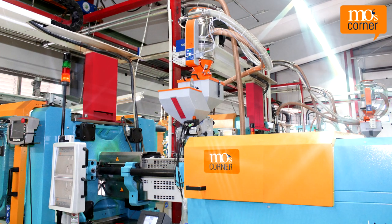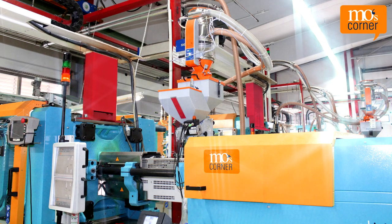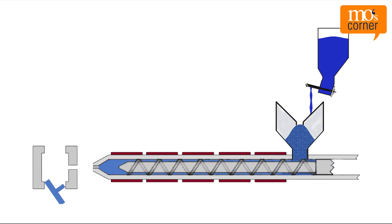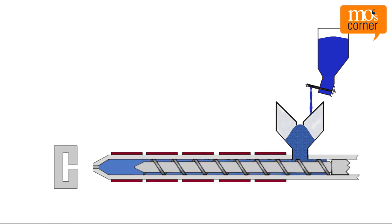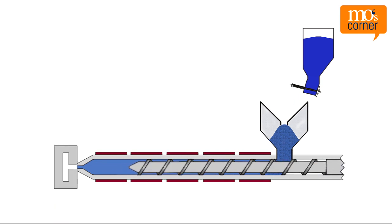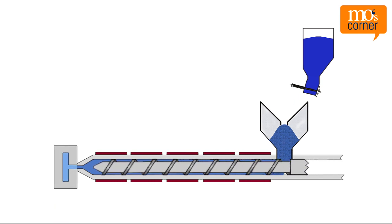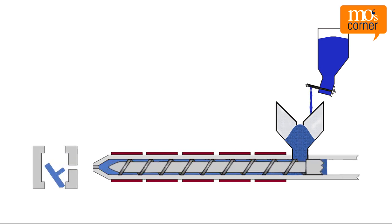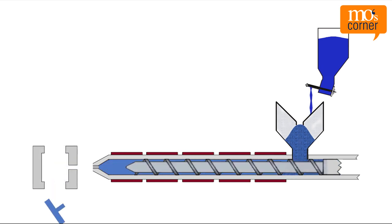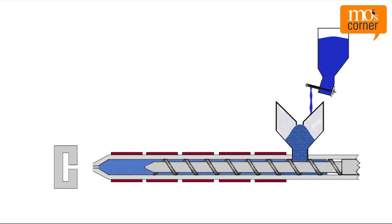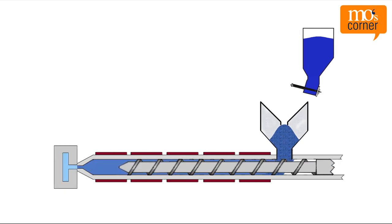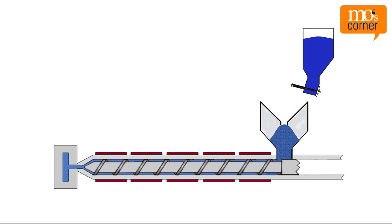Injection molding machines operate cyclically. A cycle consists of multiple phases: closing the tool, screw back, injection, after pressure, and so on. However, the raw material is only fed into the machine during screw back time.